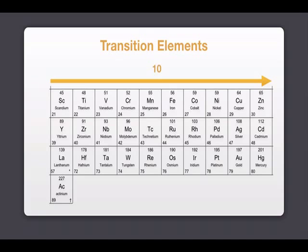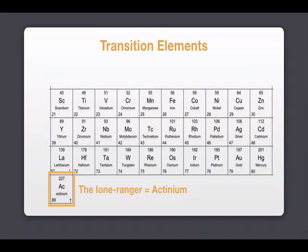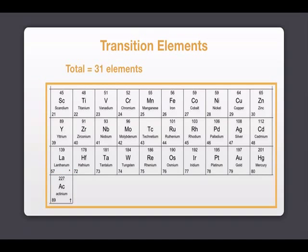To make memorizing easy, you can break the table into 2 parts. The first 15 elements on the left and the second 15 elements on the right. Lastly, the Lone Ranger Actinium. In total, there are 31 transition elements.